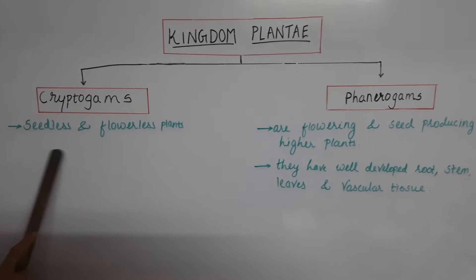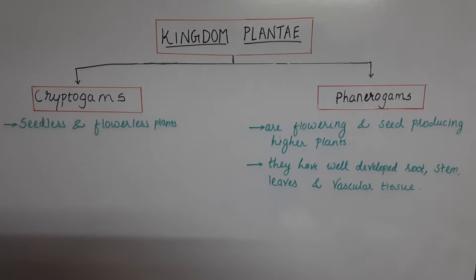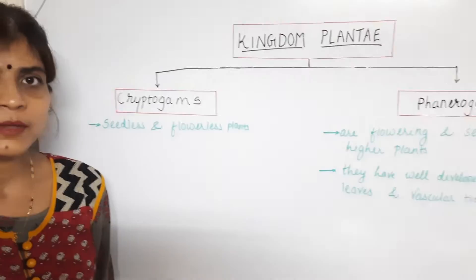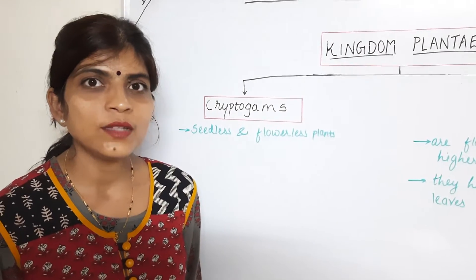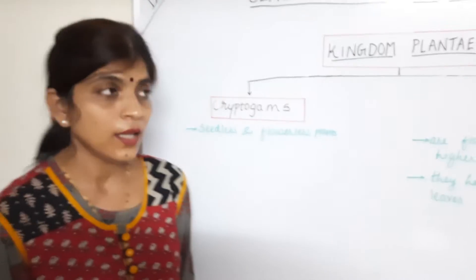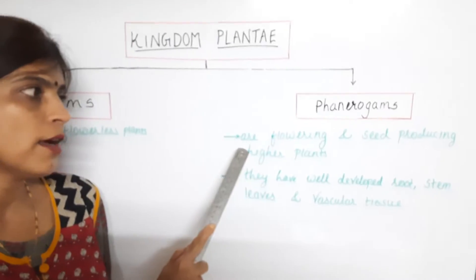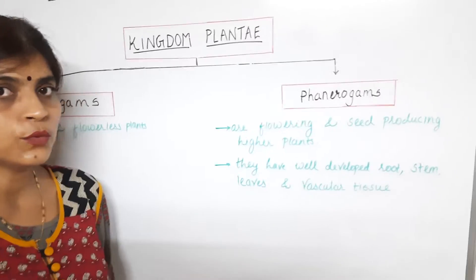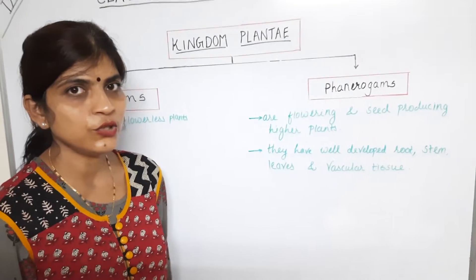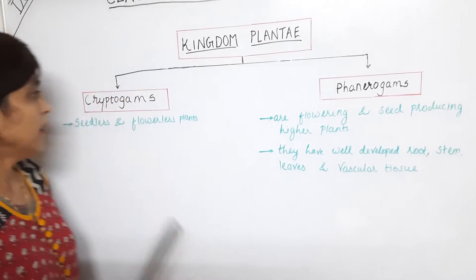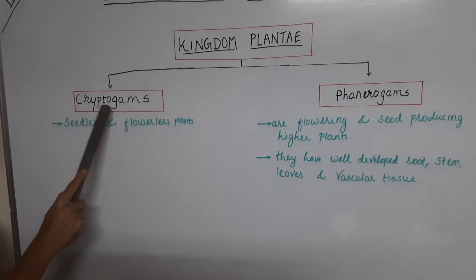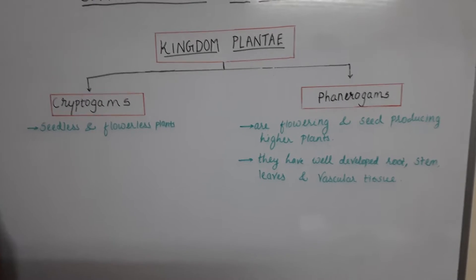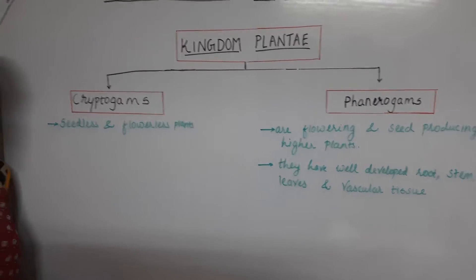Cryptogams are seedless and flowerless plants. Since they are flowerless, you may wonder how they reproduce — well, they reproduce with the help of spores. Phanerogams are flowering and seed-producing higher plants, having well-developed roots, stem, leaves, and vascular tissue. Today we are going to study cryptogams in detail; phanerogams we will study in the next session.